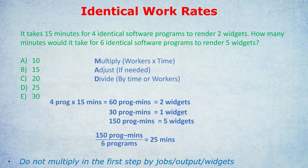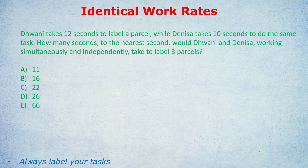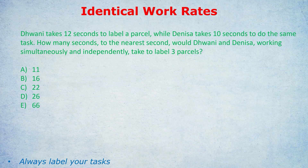It's a universal, wonderful method. I'm going to give you two further questions. Next question: if Dewani takes 12 seconds to label a parcel, while Denisa takes 10 seconds to do the same task, how many seconds to the nearest second would Dewani and Denisa working simultaneously and independently take to label three parcels? This was kind of cruel — those who pause and try this would get pretty angry, because this is NOT an identical work rate question. Why? Because they're not going at identical rates.